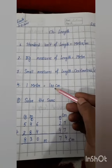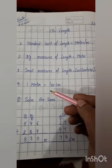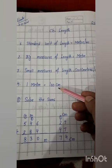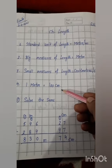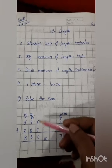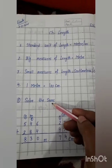One meter is equal to hundred centimeter. One meter जो है, किसके बराबर होता है? Hundred centimeter की. Then put heading. Solve the sums.